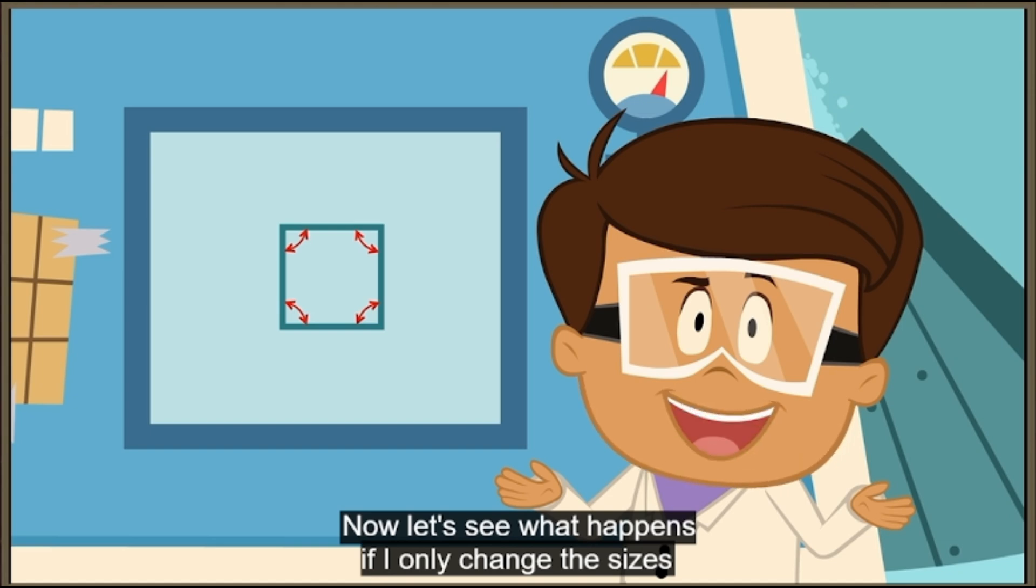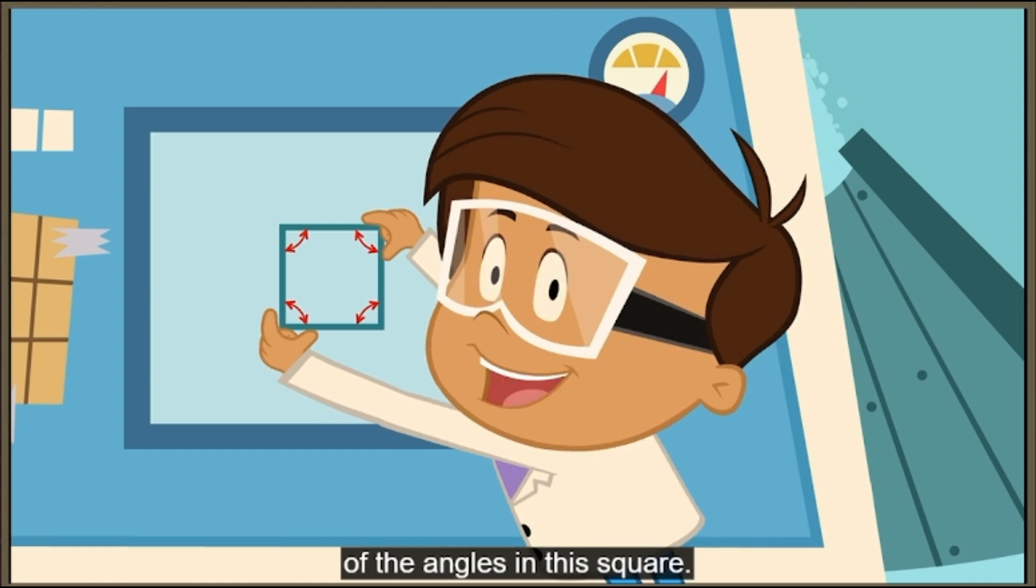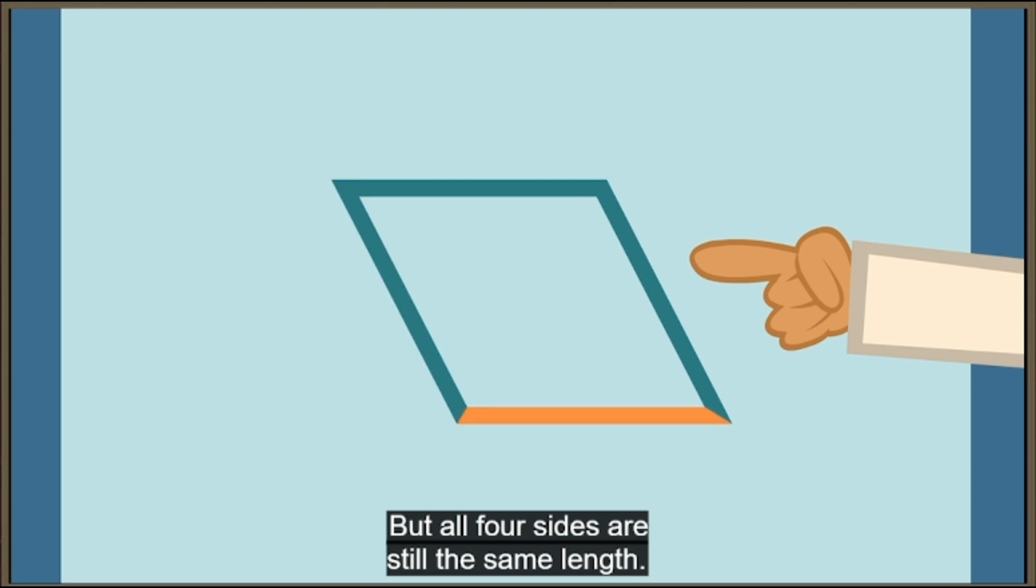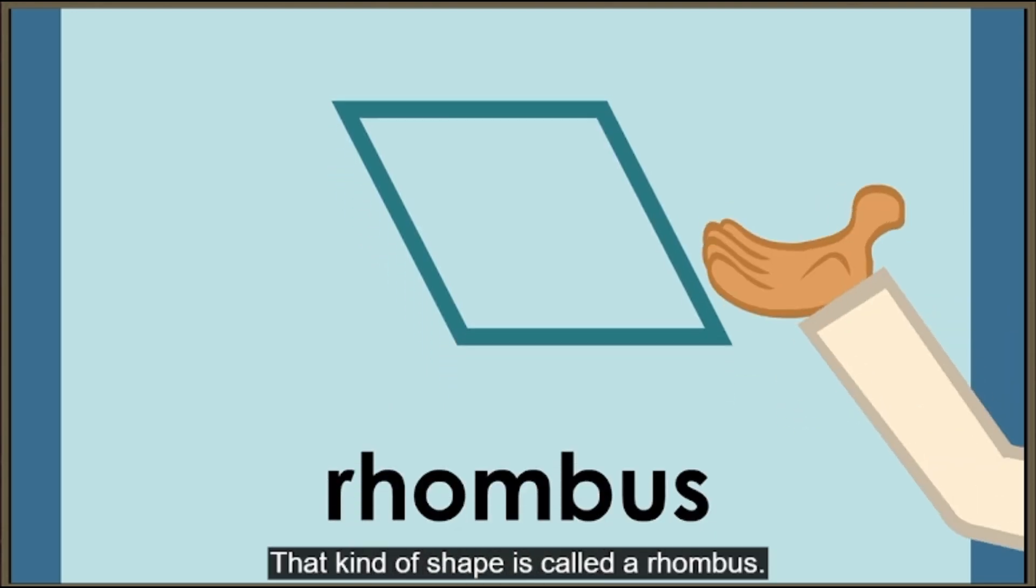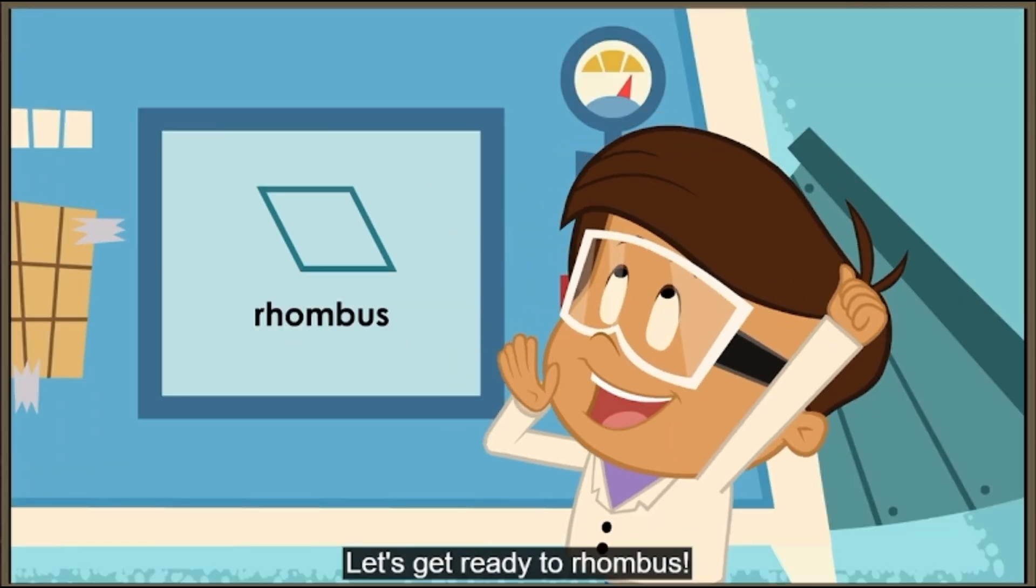Now let's see what happens if I only change the sizes of the angles in this square. It's not a square anymore, but all four sides are still the same length. That kind of shape is called a rhombus. Let's get ready to rhombus!